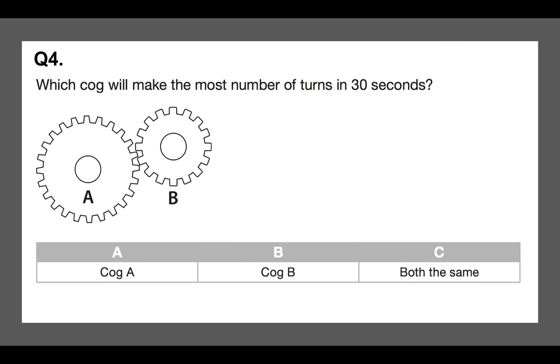Question number four, which cog will make the most turns or the most number of turns in 30 seconds. Now, the time limit here is largely irrelevant. They're basically saying to you which cog will make the most turns in a given time period, and it is B.